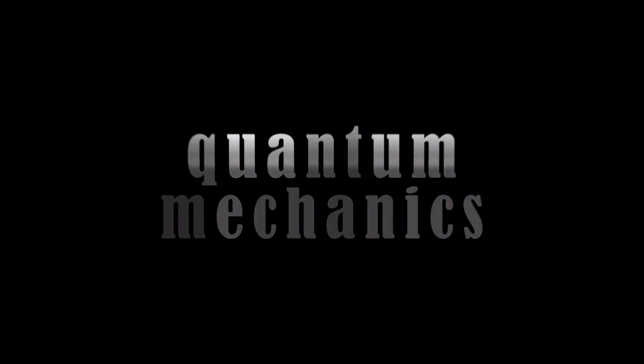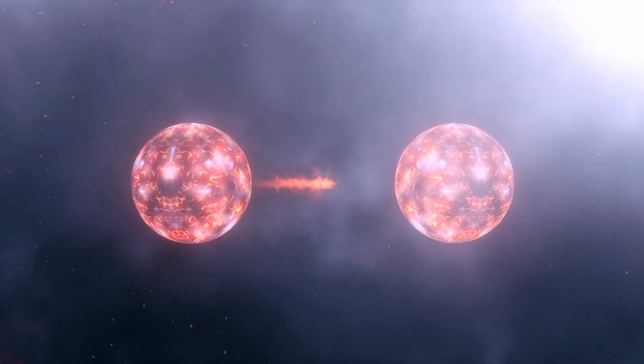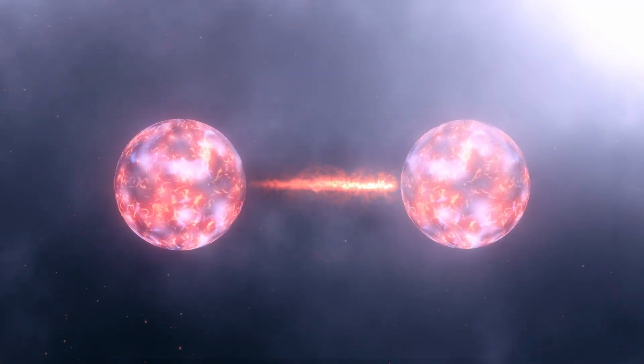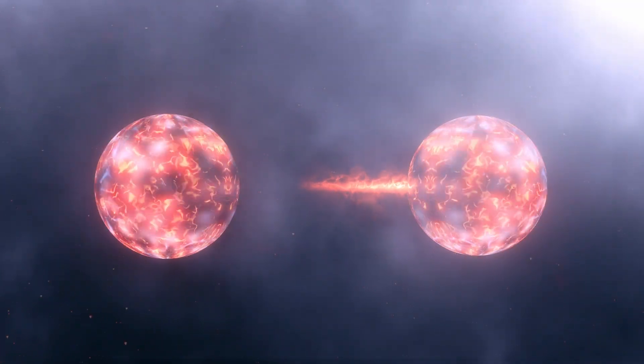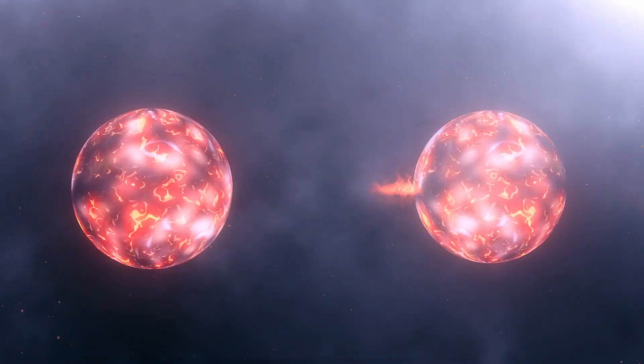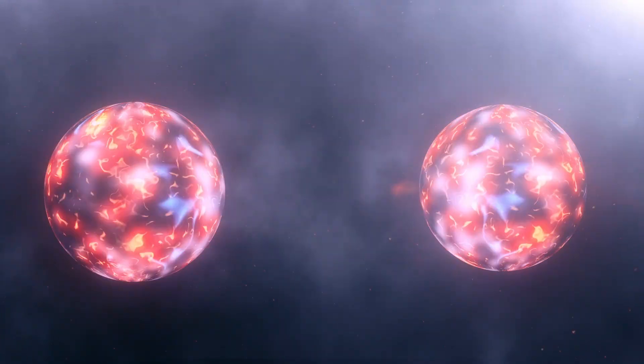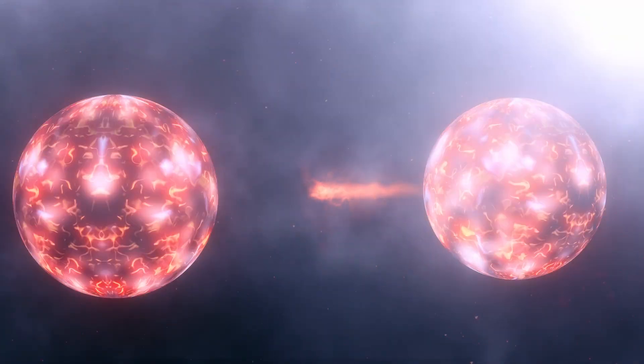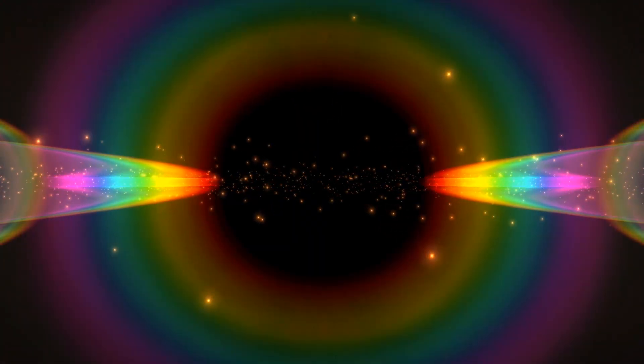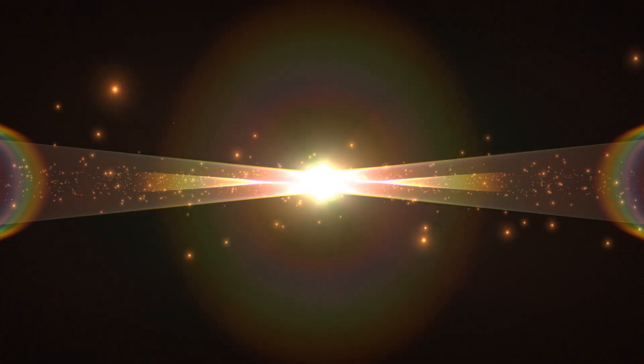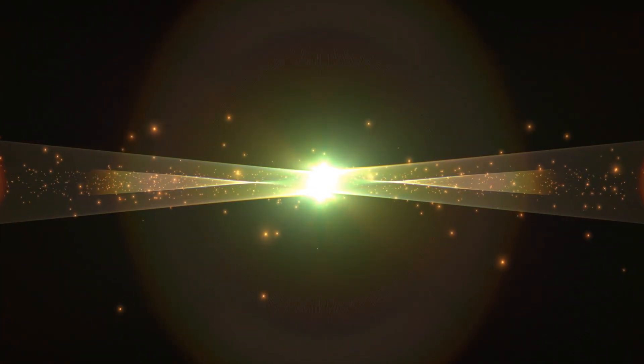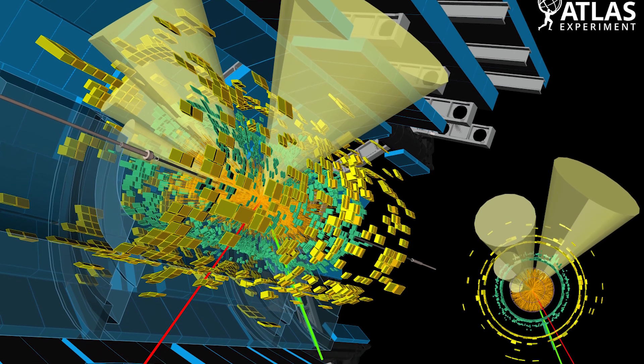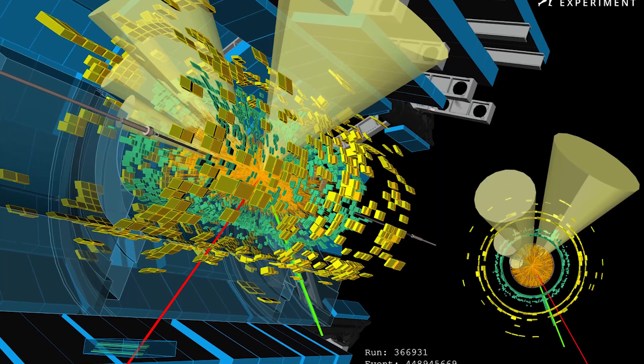The answer lies in quantum mechanics. Even though the top quarks decay rapidly, there's a tiny moment, a flicker of time, where they influence each other before vanishing. That interaction is enough to create a detectable resonance in the data. Think of it like a cosmic flashbulb. You don't see the flash itself, but you catch its reflection in a mirror. That reflection is what CMS and ATLAS saw.